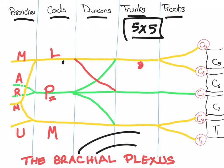Let's start with roots. What are the five things you need to know? You need to know that they are C5, C6, C7, C8, T1. Those are the five things you need to know. What about the trunks? You need to know that this is the superior trunk, this is the middle trunk, and this is the inferior trunk, but those are only three items. We will add two items.